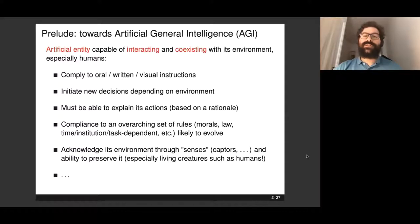Initiate new decisions depending on the current state of the environment. There's also a striving force towards explainability in AI—the need to be able to explain why a particular AI system has made decisions which must be based on a rationale. Compliance to a set of rules: morals, law, and so on. Those overarching rules in society are very likely to evolve over time and this must be acknowledged. Acknowledging the environment and interactions with humans is absolutely essential in that quest to artificial general intelligence.